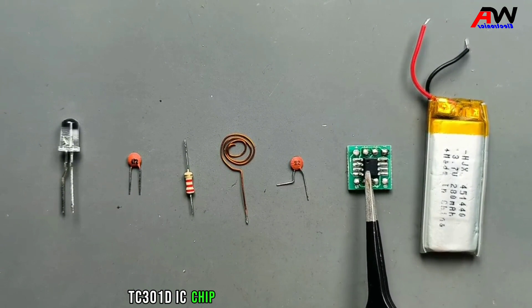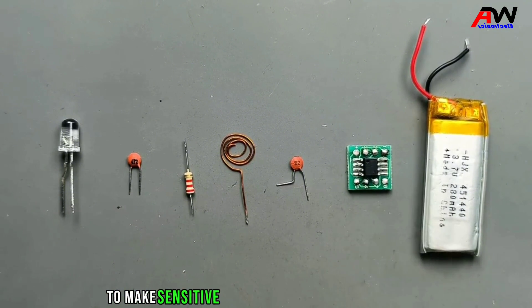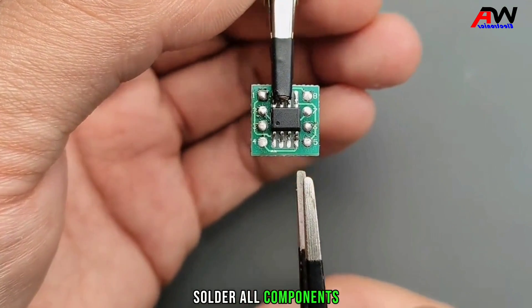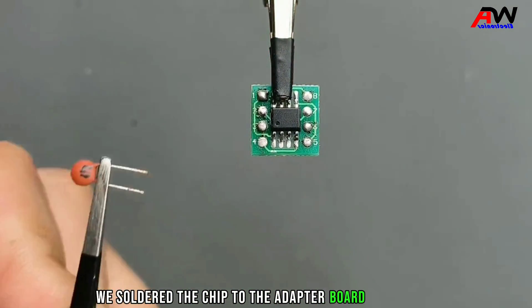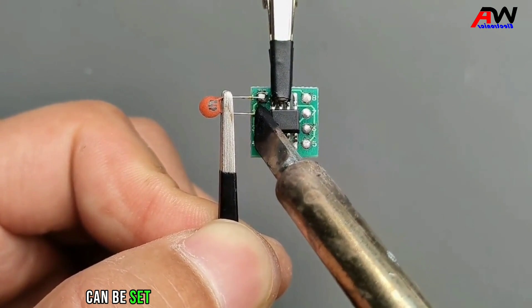TC301D IC chip and 3.7 volt lithium battery. To make a sensitive contactless water level sensor, solder all components. We soldered the chip to the adapter board in advance. This is a single channel capacitive sensing chip that can be set to human body sensing or water level sensing.